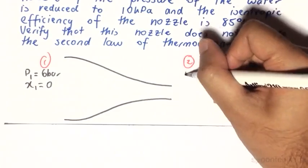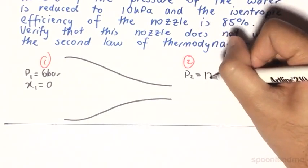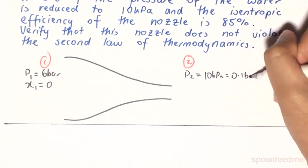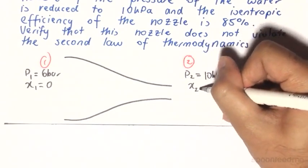At the exit, we know that the pressure is going to be 10 kilopascals which is equal to 0.1 bar. And our x2 is as yet unknown.